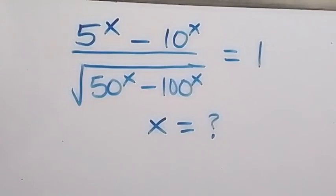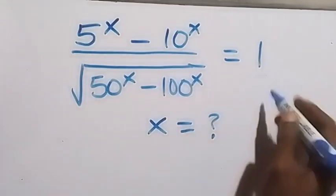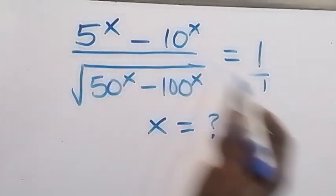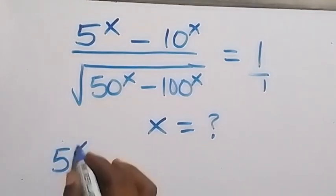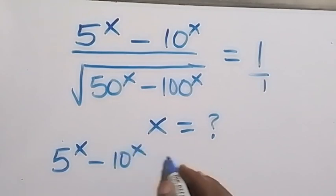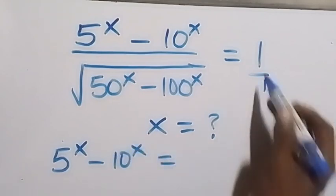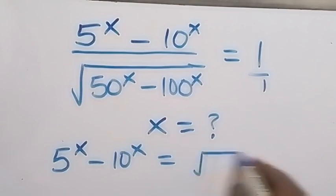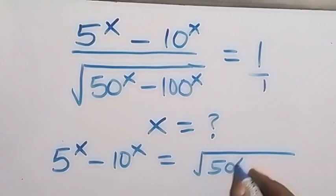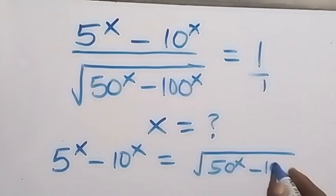Hello, you are welcome. How to solve this nice algebra problem. From here we can cross multiply, and then we have this over 1 as well. When we multiply, this is 5 raised to power x minus 10 raised to power x, which equals 1 multiplied by the square root of 50 raised to power x minus 100 raised to power x.